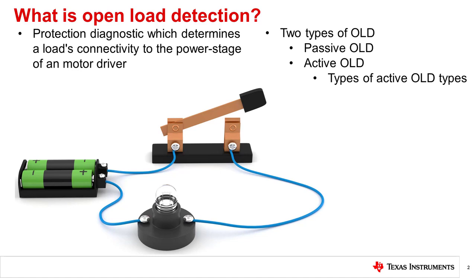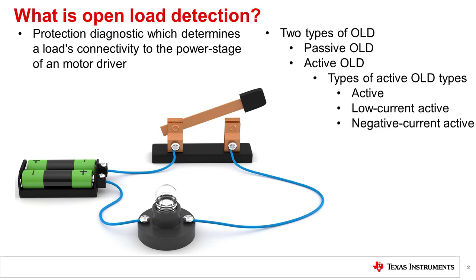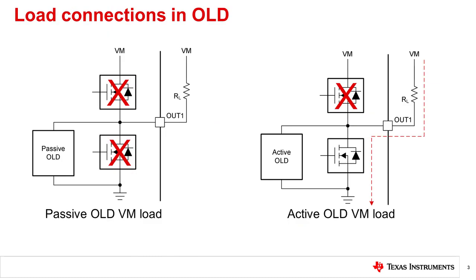In TI motor drivers, there are three variations of active OLD, including plain active OLD, low current active OLD, and negative current active OLD. Passive and active OLD circuit implementations vary between driver types.